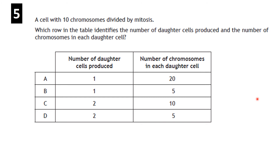Question: a cell with 10 chromosomes divides by mitosis — identify the number of daughter cells and chromosomes in each. The answer is C: mitosis produces 2 daughter cells, each with 10 chromosomes. The number of chromosomes doesn't change; each new cell is identical to the original.